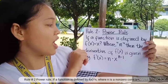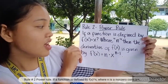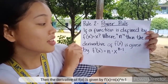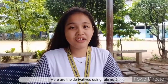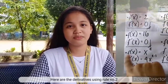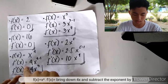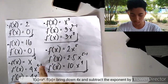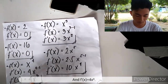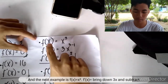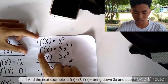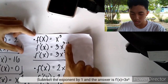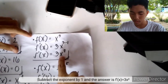Rule number 2: Power rule. If f(x) equals x to the power n, then f prime(x) equals n times x raised to the power of n minus 1. For example, f(x) equals x to the power of 4, so f prime(x) equals 4x cubed. And f(x) equals x cubed, so f prime(x) equals 3x squared.